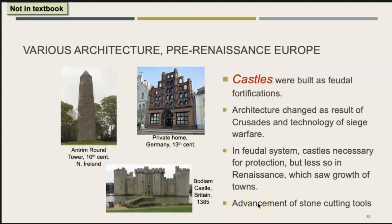In pre-Renaissance Europe, castles were built as feudal fortifications. Architecture changed as a result of the Crusades and the technology of siege warfare. In the feudal system, castles were necessary for protection, though less so in the Renaissance, which saw a growth in towns. There was also an advancement of stone-cutting tools as building evolved from wood to stone and masonry.